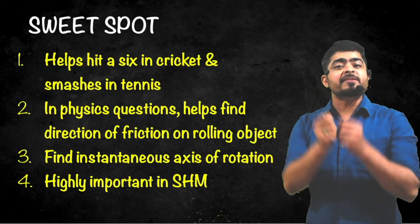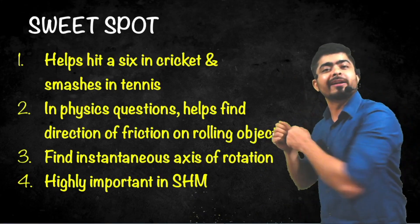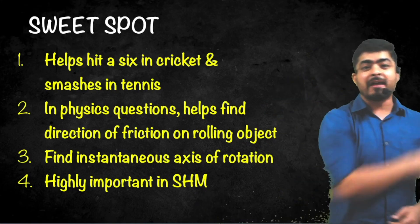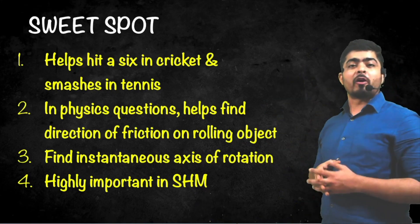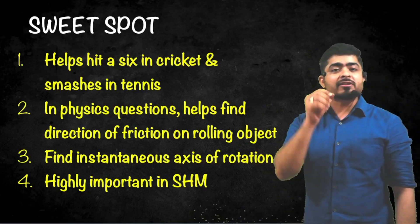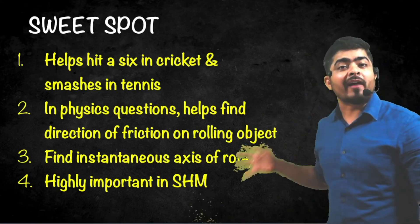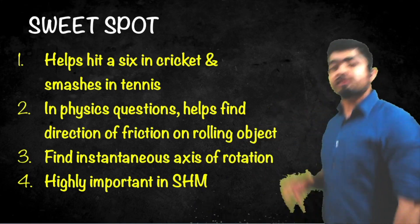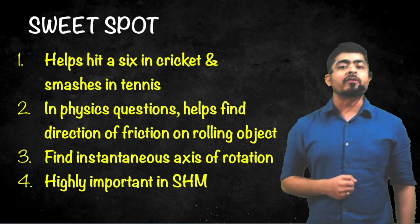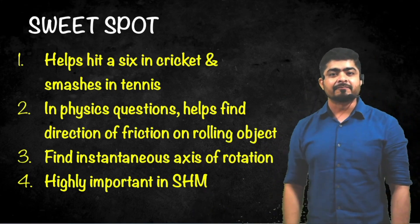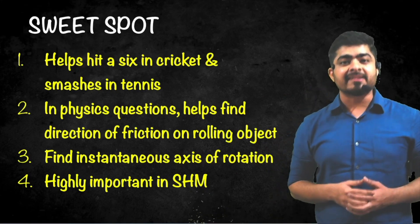If you know the sweet spot of your cricket bat, you know how to hit a six. If you know the sweet spot of your tennis racket, you know how to hit smashes. You can use it to find the direction of friction on a rolling body, to find the instantaneous axis of rotation, and also in simple harmonic motion for a very important concept you will learn later. So let's continue and understand this sweet spot.